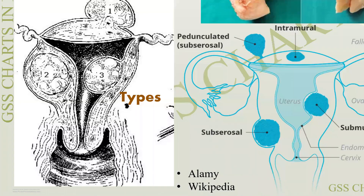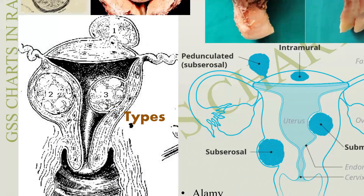The same thing is very well described in a diagrammatic form which I would like you to kindly draw in your records. A triangular or pear-shaped uterus — this is the uterine cavity, the endometrium, and the myometrium. These are the fallopian tubes on either side. This one is right in the middle of the muscle — intramural fibroid. Here it is becoming pedunculated. This is submucosal, and this is subserosal.